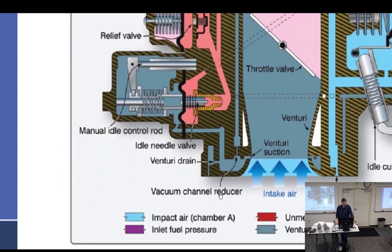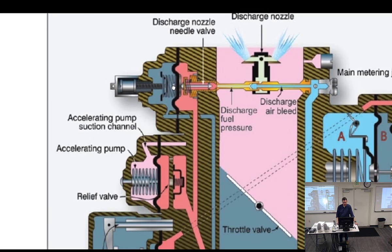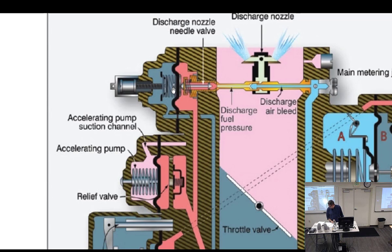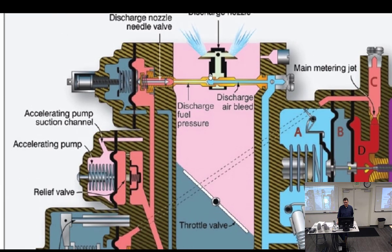At the same time, there's a vacuum channel reducer — a little bit of vacuum right there which also helps it open. When pressure decreases, the valve closes quickly to allow fast and efficient cutoff. It maintains a constant pressure downstream — so this acts like a pressure relief valve. And at the same time, impact air comes up through here, emulsifying the fuel, and out it goes. That is everything on here.